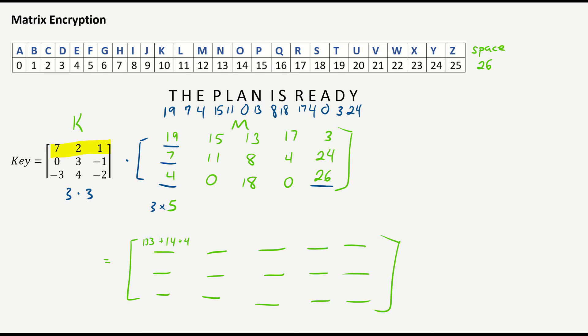I take first row times, we'll go second column. So I have to go 7 times 15, which is 105, plus 2 times 11, which is 22. And then 1 times 0, which is 0. And we go through like that for every slot in there. So I'm going to go through and perform that multiplication. You can do it by yourself. And we'll check in once I get that multiplied.